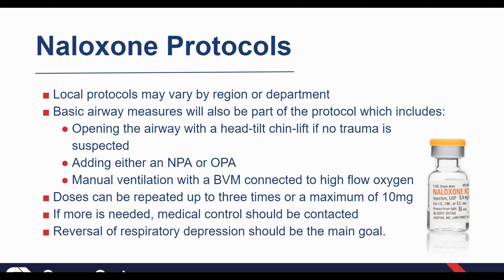Basic airway measures should be part of your protocol: opening the airway with a head-tilt chin-lift if no trauma suspected, or a modified jaw thrust. Get in that airway adjunct — NPA or OPA; I prefer NPA, but there's nothing wrong with OPA. Manually ventilating with a BVM on high-flow oxygen is probably the best thing you can do after opening the airway. That's what will reverse the hypoxia and prevent neurological deficits. Give your dose up to the 10-milligram max, then contact med control if you need more.